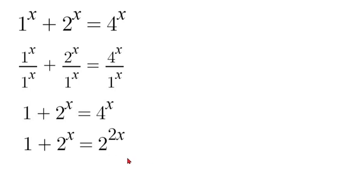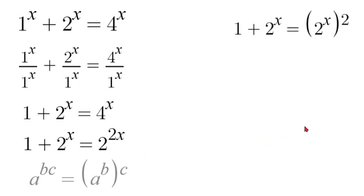Next we're going to apply some exponent properties. So if we had a to the power of bc that is also equal to a to the power of b to the power of c. So that means we can pull out either our 2 or our x. In this case we're going to pull out the 2 value. So we'll have 1 plus 2 to the power of x is equal to 2 to the power of x squared.